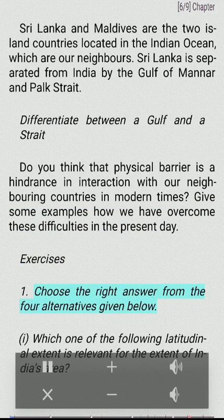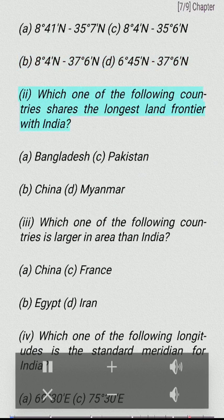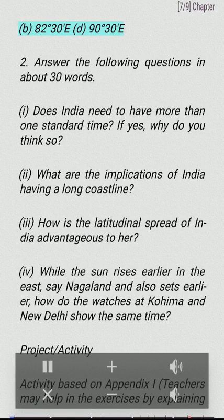Exercises: Choose the right answer from the four alternatives given below. (I) Which one of the following latitudinal extents is relevant for India's area? (A) 8°41'N–35°7'N, (B) 8°4'N–37°6'N, (C) 8°4'N–35°6'N, (D) 6°45'N–37°6'N. (II) Which one of the following countries shares the longest land frontier with India? (A) Bangladesh, (B) China, (C) Pakistan, (D) Myanmar. (III) Which one of the following countries is larger in area than India? (A) China, (B) France, (C) Egypt, (D) Iran. (IV) Which one of the following longitudes is the standard meridian for India? (A) 69°30'E, (B) 82°30'E, (C) 75°30'E, (D) 90°30'E.